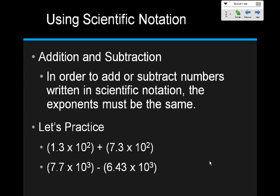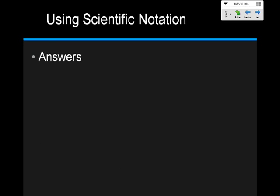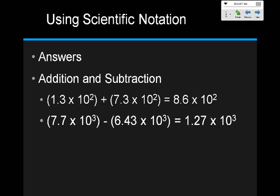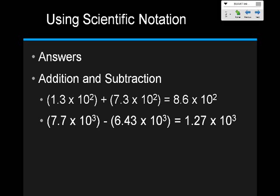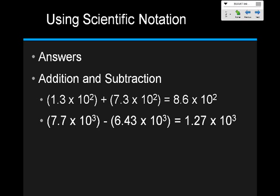Go ahead and pause the tape, do both of these problems, and then resume the tape for the answers. All you had to do was say 1.3 plus 7.3 equals 8.6, then keep the same power of 10 — so the answer is 8.6 times 10 to the second. For the subtraction: 7.7 minus 6.43 equals 1.27, and you keep 10 to the third power.